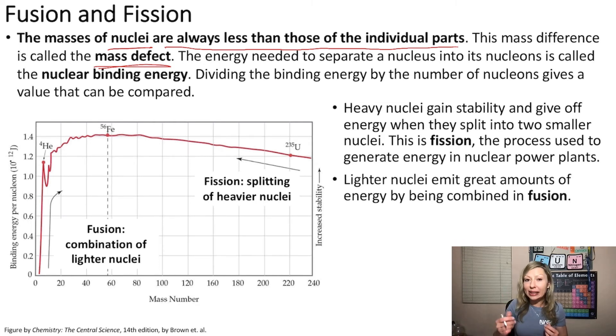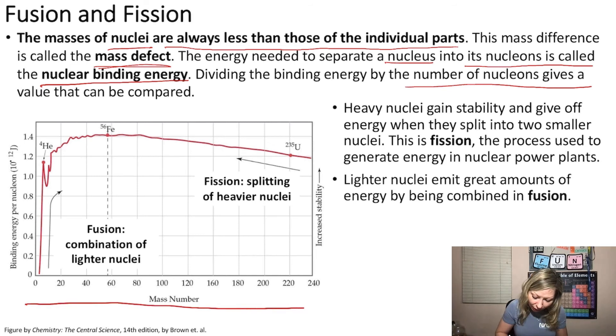Now, the energy needed to separate the nucleus into its nucleons, so neutrons and protons, is called the nuclear binding energy. If we divide the nuclear binding energy by the number of nucleons, so neutrons plus protons, it is going to give us a value that we can compare for different nuclei. And that is shown in this figure right here. We have the mass number here and the binding energy per nucleon right here. So as you can see, as we increase the mass number, we are going to increase the binding energy.